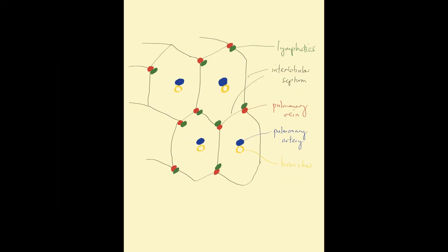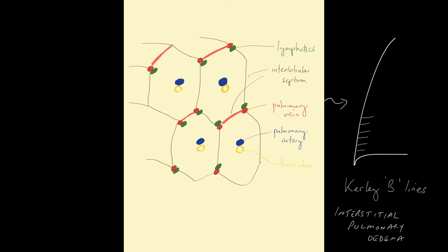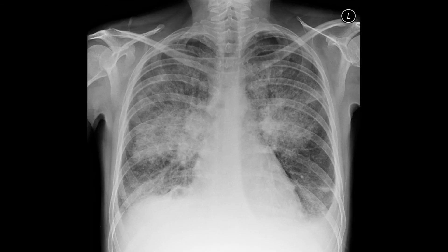To recap: the secondary pulmonary lobule shows the interlobular septum through which the lymphatics and pulmonary veins run. Any fluid that leaks out of these vessels because of obstruction at the hilum, pulmonary venous hypertension, or left atrial hypertension will produce curly B lines. The next stage in heart failure is where interstitial pulmonary oedema leads to alveolar pulmonary oedema — when the interlobular septum has become engorged, fluid leaks into the centre of the secondary pulmonary lobule into the alveolar air spaces, so we've got consolidation in a perihilar position.